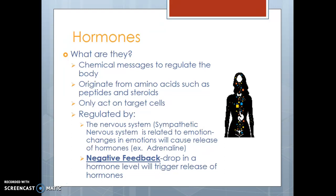There's something called negative feedback. Negative feedback is when you have a drop in hormone levels in your body, which will trigger the nervous system to release more of that hormone and will also let the glands know to produce more of those hormones. So hormones are chemical messengers that originate from amino acids, only act on specific cells, are regulated by the nervous system — primarily the sympathetic nervous system — and negative feedback triggers more production if levels drop.